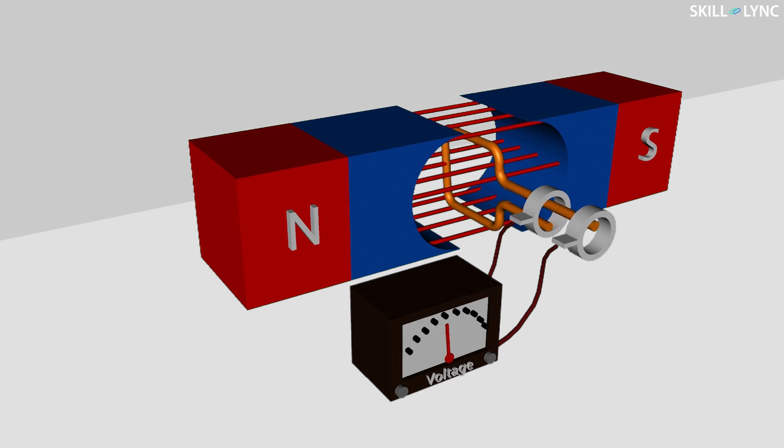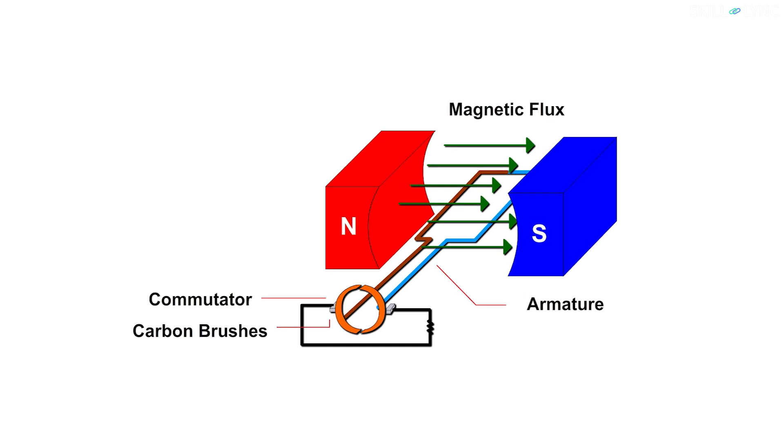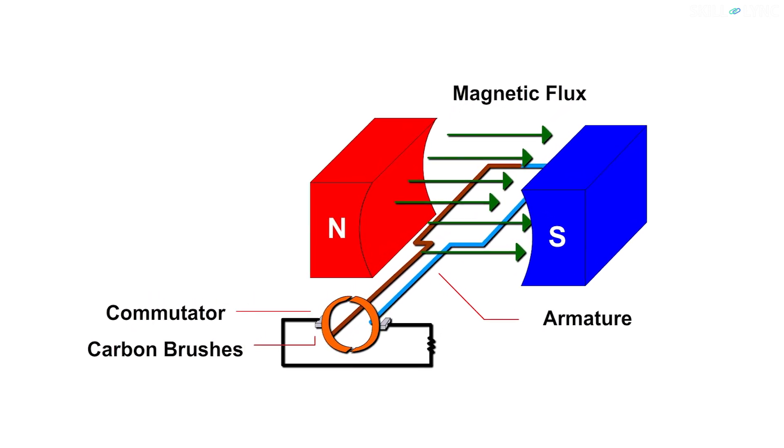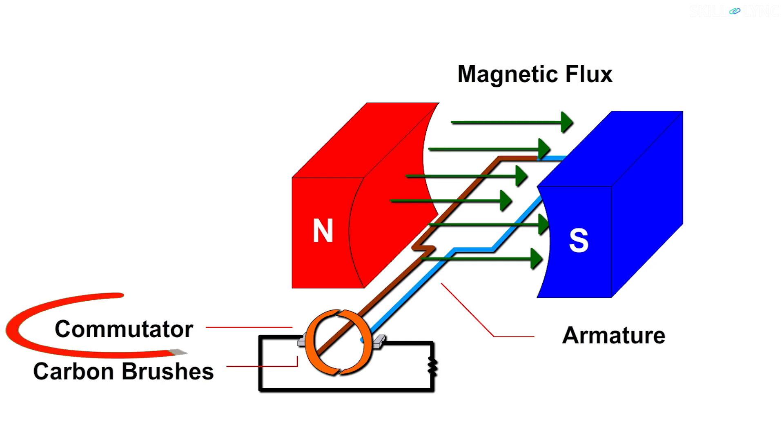Next we have the DC generator. The construction of DC generators is similar to AC generators and the same laws used, except that here instead of split rings, commutators are used to collect the current. These commutators keep the direction of the current towards one way and as a result we get a direct current as output.